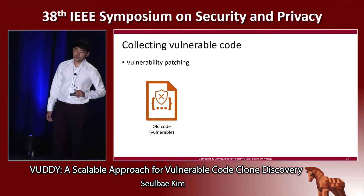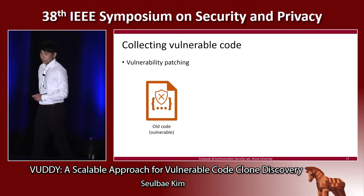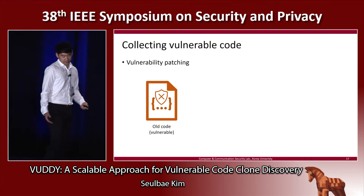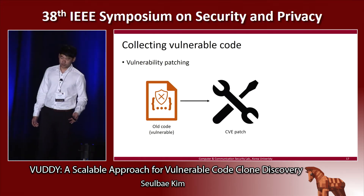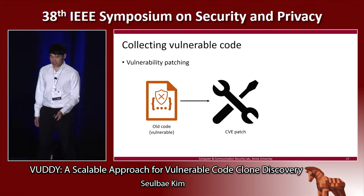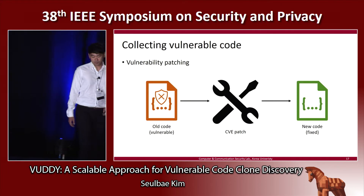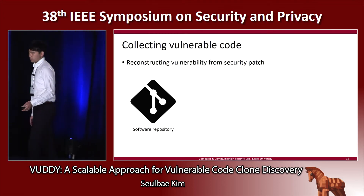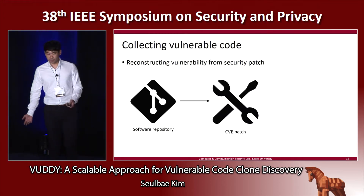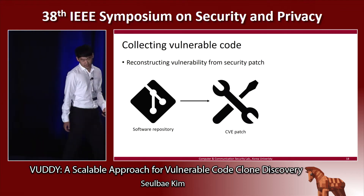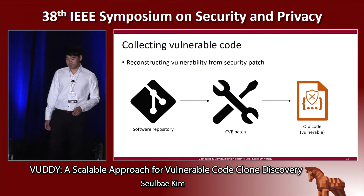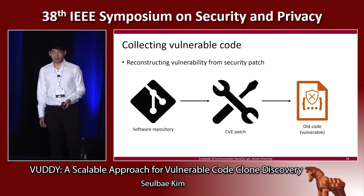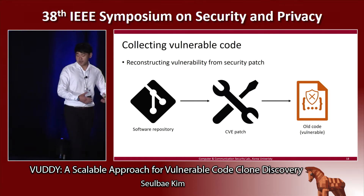The first step is to collect vulnerable code. We leverage the standard vulnerability patching process to get vulnerable code fragments. When you have a vulnerable code, you can write a CVE patch and apply it to get the new fixed code. Applying this procedure in reverse, from software repositories such as the Android Git repository or Linux kernel repository, you can extract every CVE patch to reconstruct the old vulnerable code. These old vulnerable codes are then inserted into our vulnerability database.